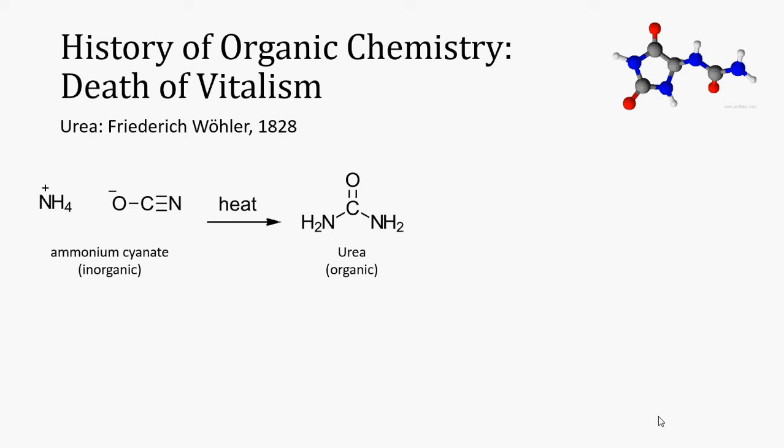Urea was a well-known organic compound isolated from the urine of multiple organisms. This is such a classic example that showed that the vitalism theory was flawed that folks have developed many resources to explain how this reaction happens. The animation that is now playing at the bottom of the screen shows how the bonds are forming and breaking between ammonium cyanate to form urea. This animation is a graphical representation of a chemical mechanism, one that we will eventually study as we progress through organic chemistry.